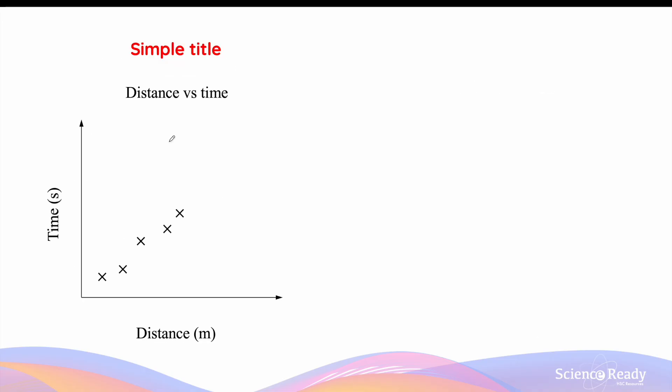The first component that can be improved is its title. The title of distance vs time is too simple, as it only repeats the labels of the axes. Instead, the title should provide more information, such as the context of the graph. Instead of just distance vs time, distance travelled by a runner over time provides the reader more context and therefore understanding of what the data points represent.